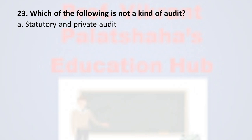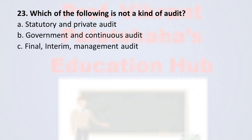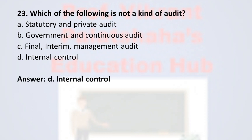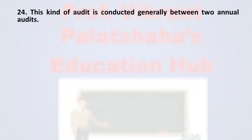Question number twenty-three: which of the following is not a kind of audit? Option A statutory and private audit, option B government and continuous audit, option C final, interim and management audit, and option D internal control. The correct option is option D, internal control — internal control is not a type of audit.